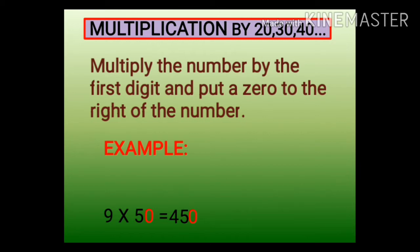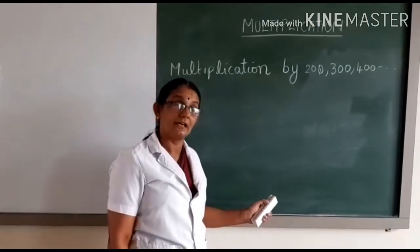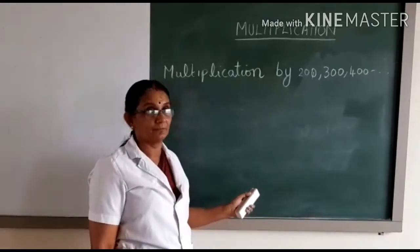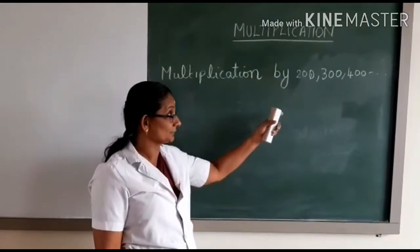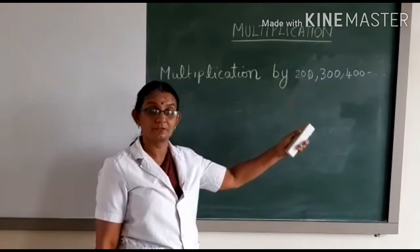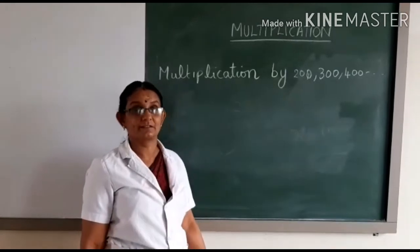So you have learnt how to multiply a number by multiples of 10. Now let us see how to multiply a number with 200, 300, 400, and so on.